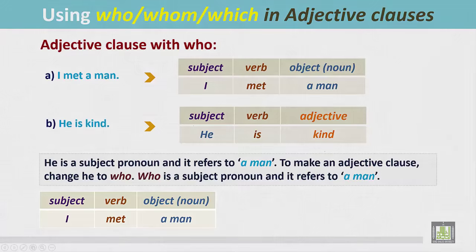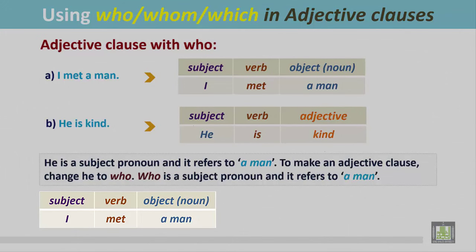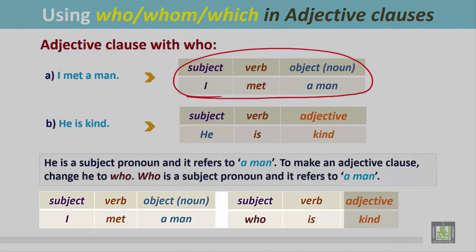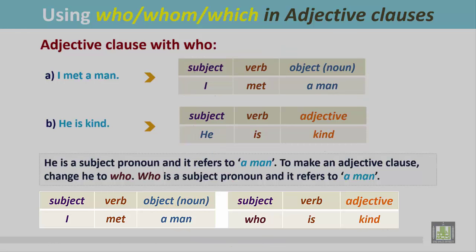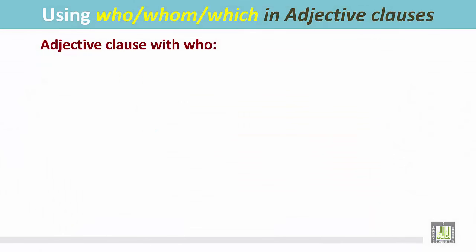See the structure — how we join. First, write the first sentence: I met a man. Change 'he' to 'who', so 'who is kind.' This part modifies the noun 'man.' Result: I met a man who is kind.